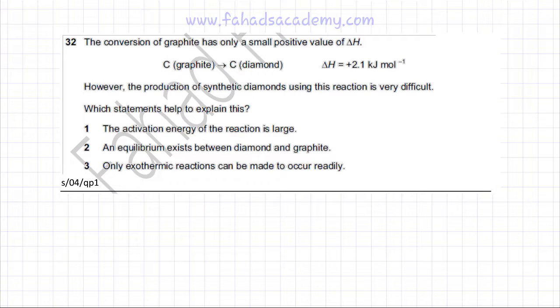In the following chemical energetics question, the question reads that the conversion of graphite has only a small positive value of enthalpy change. So when you're converting carbon which is in graphite form to carbon which would be in diamond form, the enthalpy change is very small.